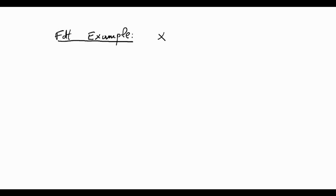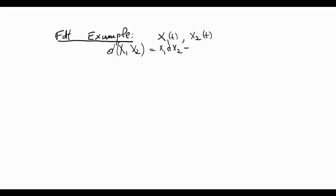Let me remind you that if we have x1 and x2, which are two functions of t, and if they are deterministic functions and if they are sufficiently differentiable, then it is known that d of the product x1·x2 equals x1 dx2 plus x2 dx1. This is the classical differentiation formula.